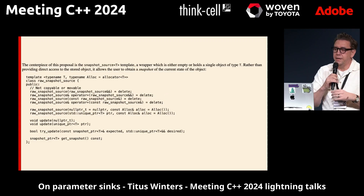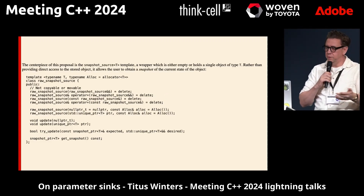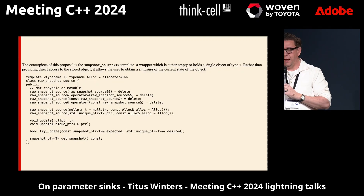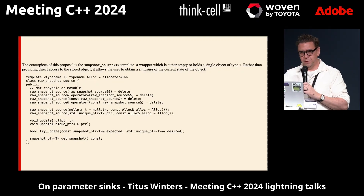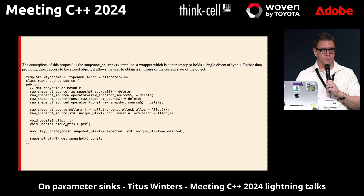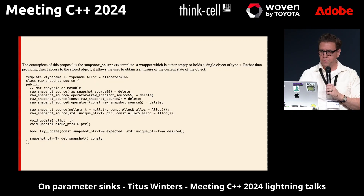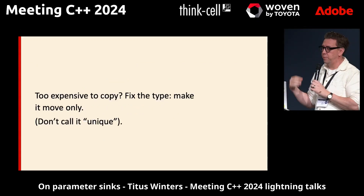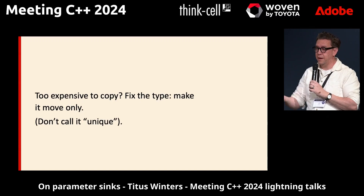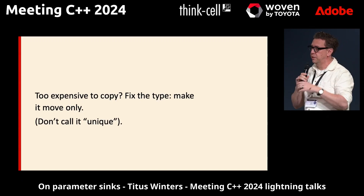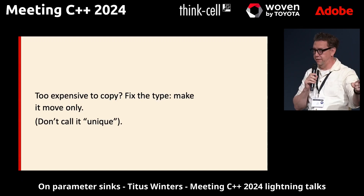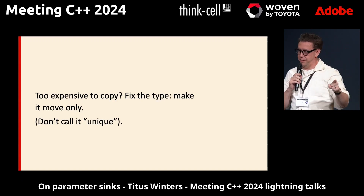And if you're writing a maybe-sink, that is when you use an rvalue reference parameter by itself — and that function had better be returning bool or providing some other mechanism to tell you whether it actually did the move. If something is expensive and you want to avoid accidental copies, that's a property of the type, not a single function. Make a new move-only type, and don't call that type 'unique' — that is not what move-only means. Ask me about uniqueness later. That's my talk.